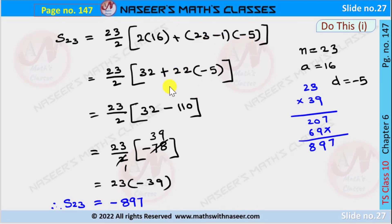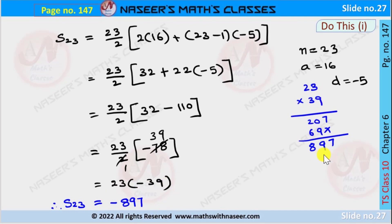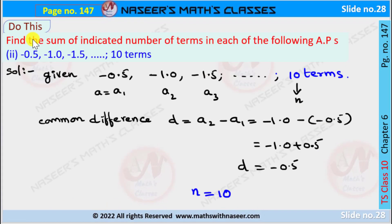This can be written as 23/2 × (32 + 22×(−5)). Multiplying 22×(−5) gives −110, so we simplify 32 − 110 = −78. Cancelling the 2, we get 23 × (−39). Multiplying 23 × 39 gives 897, therefore the sum of 23 terms of the given series is −897.